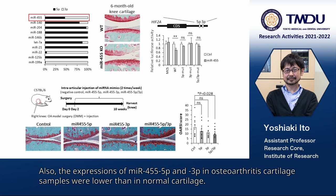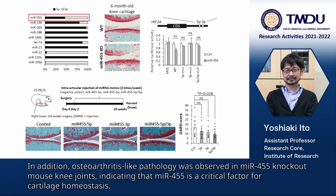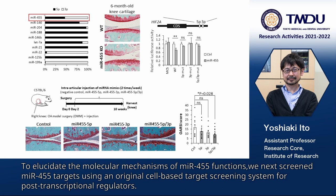Also, the expressions of MIR-455 5P and 3P in osteoarthritis cartilage were lower than in normal cartilage. In addition, osteoarthritis-like pathology was observed in MIR-455 knockout mice, indicating that MIR-455 is a critical factor for cartilage homeostasis.